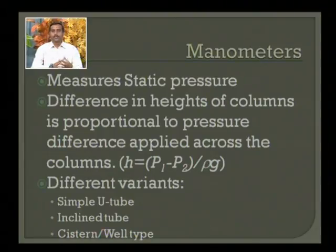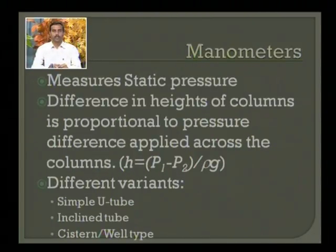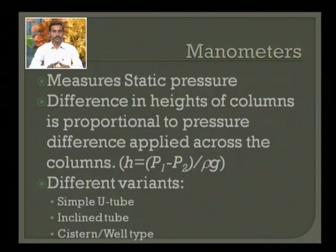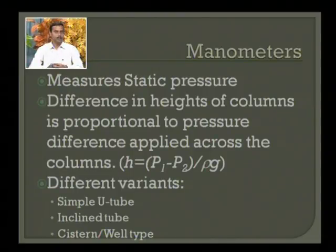Manometers measure static pressure; they cannot be utilized for dynamic pressure measurement. In a simple U-tube filled with liquid, if pressure is equal on both sides the level in both tubes will be the same. The difference in level indicates the difference of pressure on both heads. The expression is: h (height difference between the two menisci) equals pressure difference divided by rho times g, where rho is the density of the liquid. For lower pressure measurement use a light density material; for higher pressure use a higher density material.